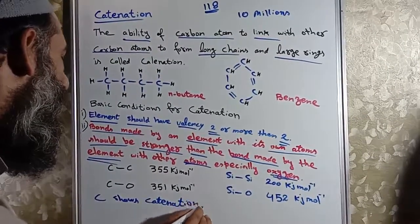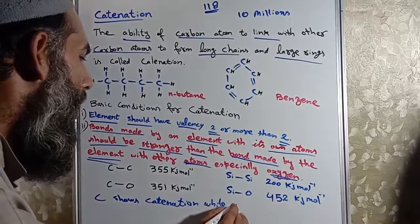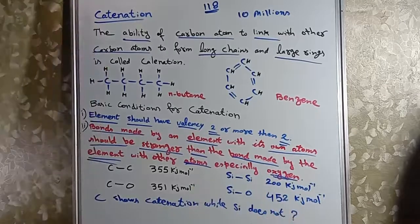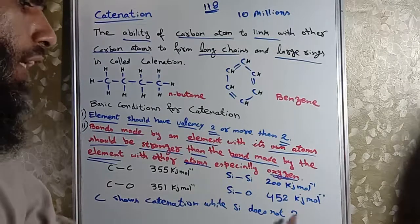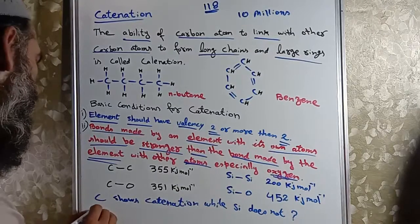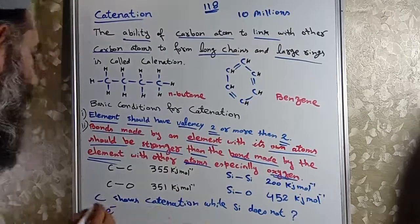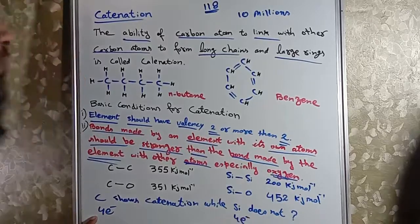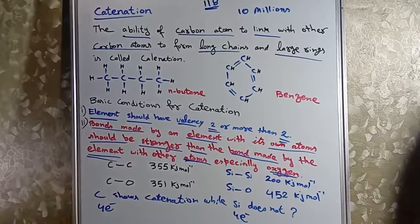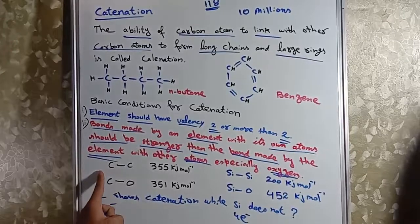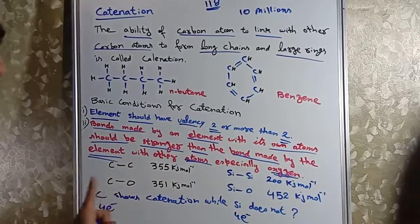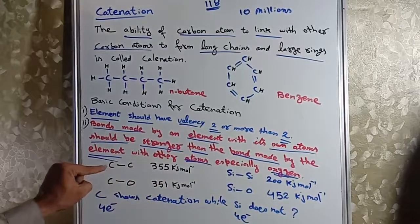Carbon shows catenation while silicon doesn't. Bataiye carbon catenation show karta hai jabke silicon nahin show karta, kyun? Dono ke last shell mein four electrons hain. Carbon ka group number four, silicon ka bhi group number four. Lekin wajah yeh hai ke carbon jab apni own carbon atom ke saath bond banata hai to bond stronger hota hai.